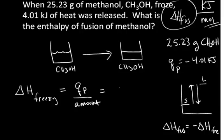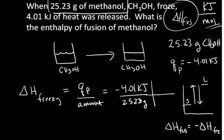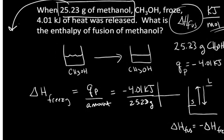And so the heat flow at constant pressure is negative 4.01 kilojoules. And the amount is 25.23 grams. Now we want to go the extra mile and express that in terms of moles. And so all we need to do is convert the grams of methanol to moles of methanol.